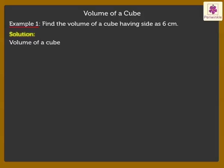Volume of a cube is equal to side into side into side, which is equal to 6 cubed, which is equal to 6 into 6 into 6, which is equal to 216 cubic centimeters.